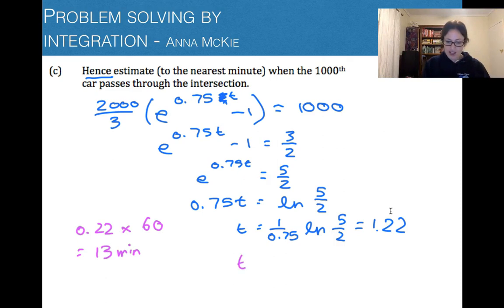So therefore, t, we have 1 hour, hence the 1, and we need to add on 13 minutes. So 1 hour is 60 plus 13, so approximately equal to 73 minutes. So go back and read the question, hence estimate to the nearest minute when the 1,000th car passes through the intersection when time is approximately 73 minutes.